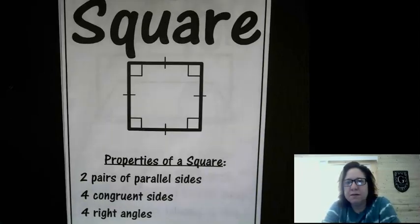Here's the square. It has two pairs of parallel sides, four congruent sides, and four right angles. So a square is a special type of rectangle.